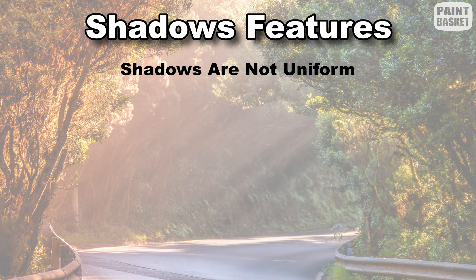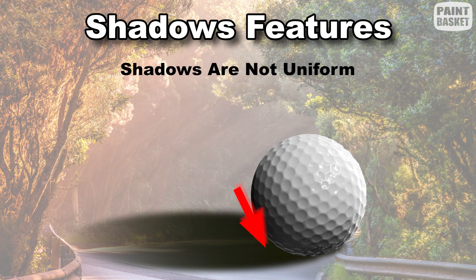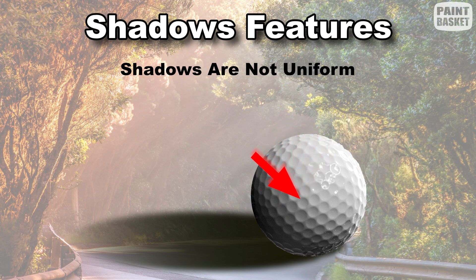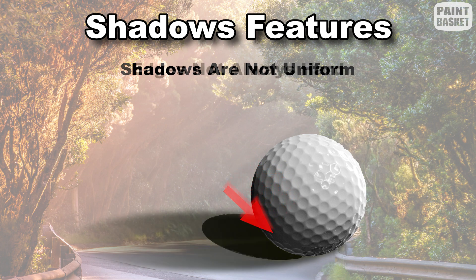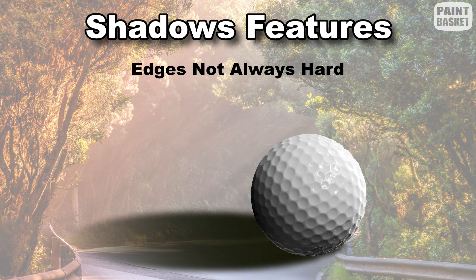Shadows aren't uniform — they appear darker and lighter depending on a variety of factors. The closer to an object a cast shadow is, the darker it appears. On the other hand, the more an area on an object points away from the light, the darker its form shadow will appear. Moving on, shadows don't all have hard edges. Because light can only travel in a straight line, reflected light affects cast shadows in open areas more than it will in a tight area. This results in a cast shadow being more crisp against the object, with it gradually blurring the further away it extends.